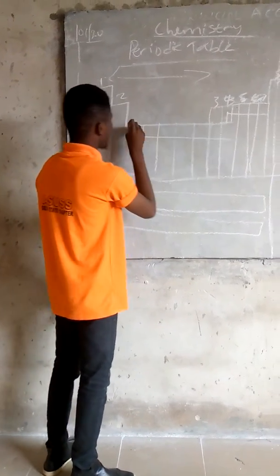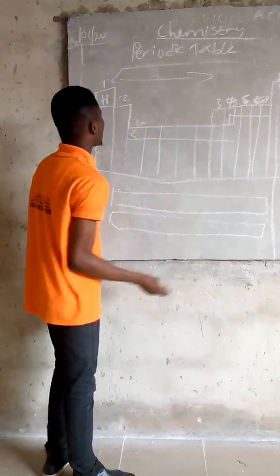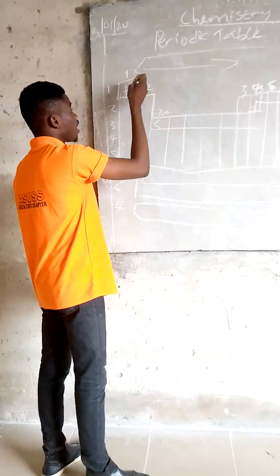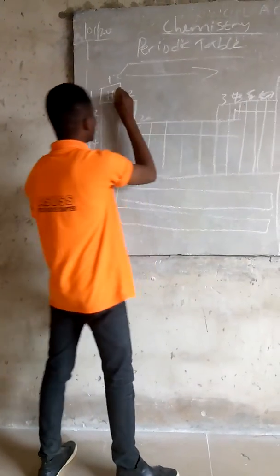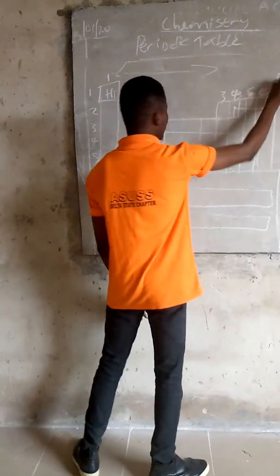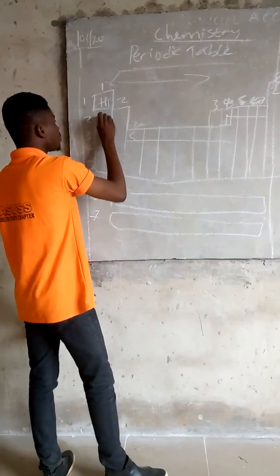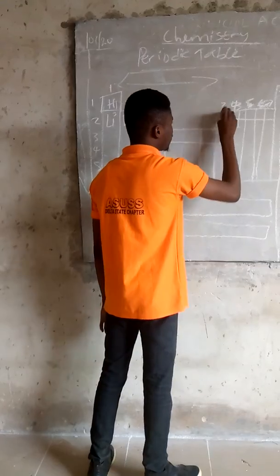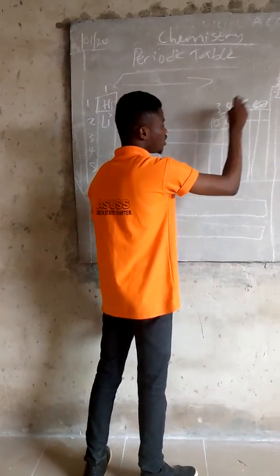Starting from calcium which is 20. Now all the elements here, the atomic numbers are arranged accordingly, which I will show you. Helium is 2, lithium is 3, beryllium is 4, boron is 5, carbon is 6.